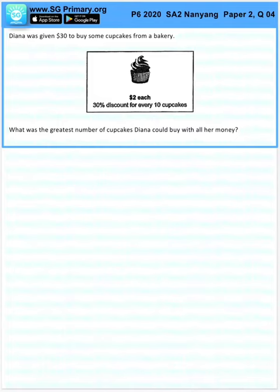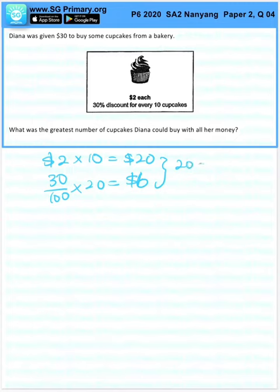So for 10 cupcakes, she will pay 2 times 10, $20 right? But she's given a 30% discount. She's given a $6 discount. So she pays $20 minus 6. She only pays $14 for 10 cupcakes. So she has $30.